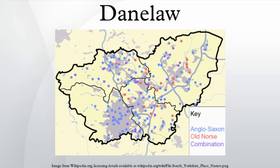The Danelaw roughly comprises 15 shires: Yorkshire, the five boroughs of Leicester, Nottingham, Derby, Stamford and Lincoln, as well as Essex, the Kingdom of East Anglia, shires of Cambridgeshire, Suffolk and Norfolk, East Midlands shires of Northamptonshire, Huntingdonshire, Bedfordshire, Hertfordshire, Middlesex and Buckinghamshire — one-third of the total area of the English Kingdom at the time.